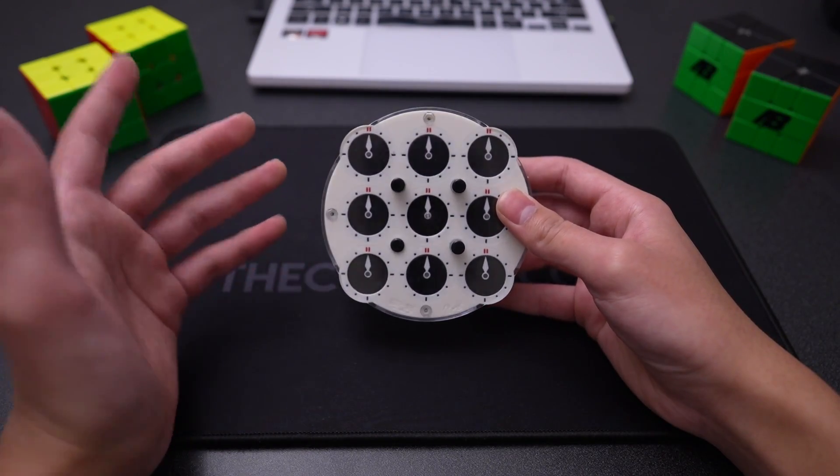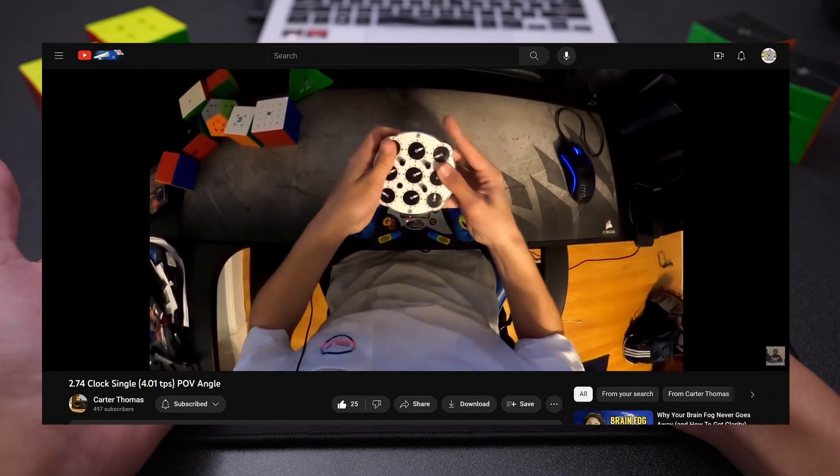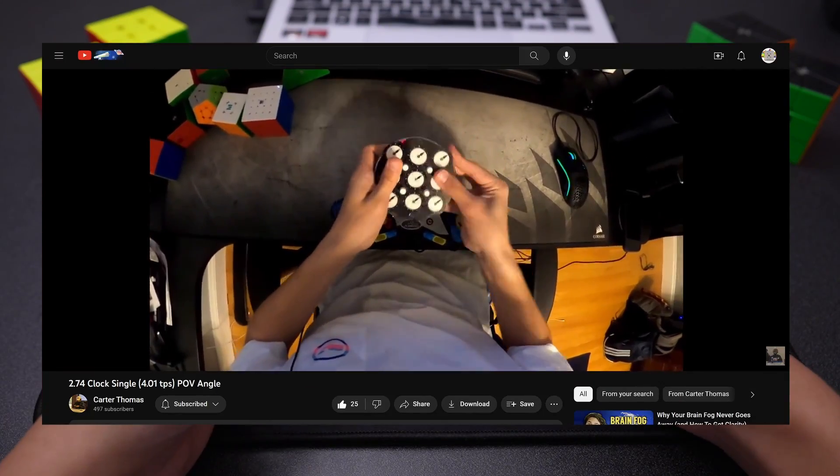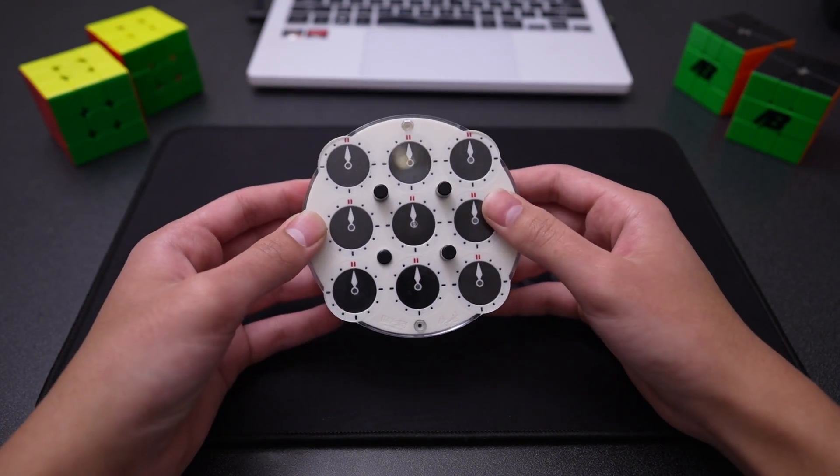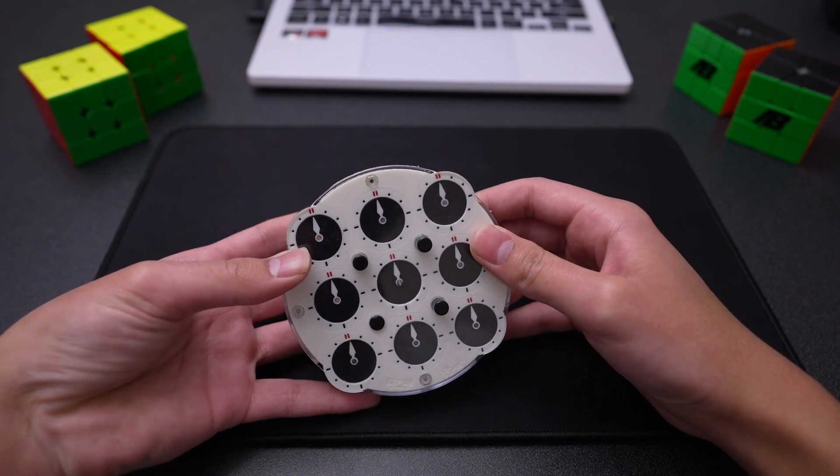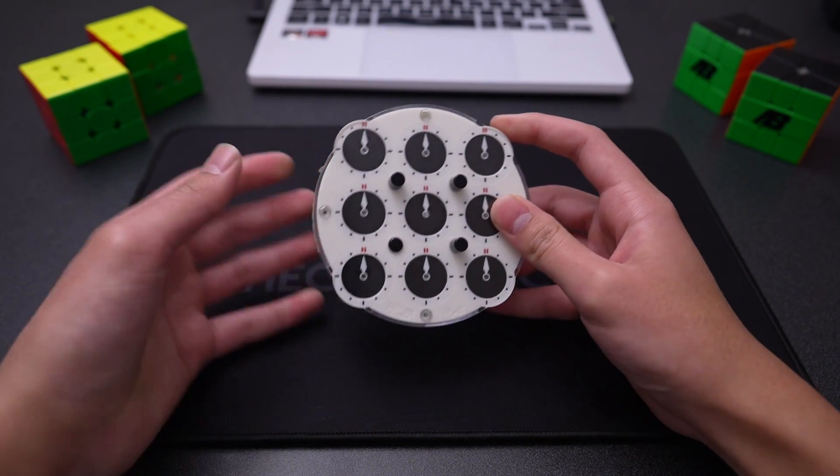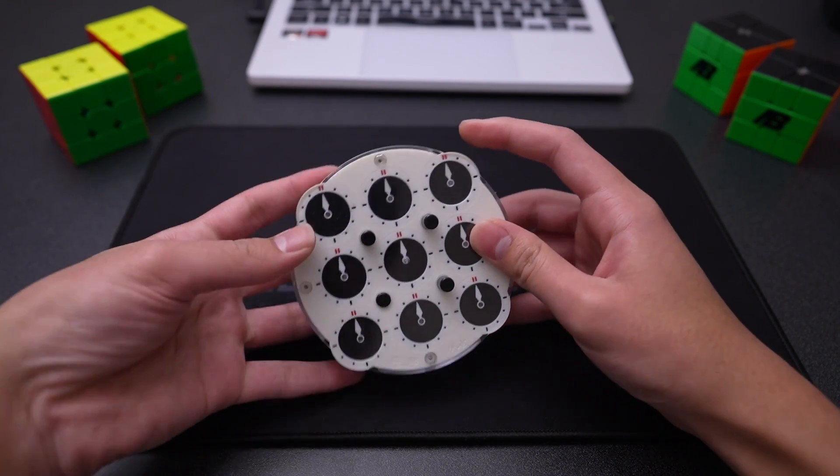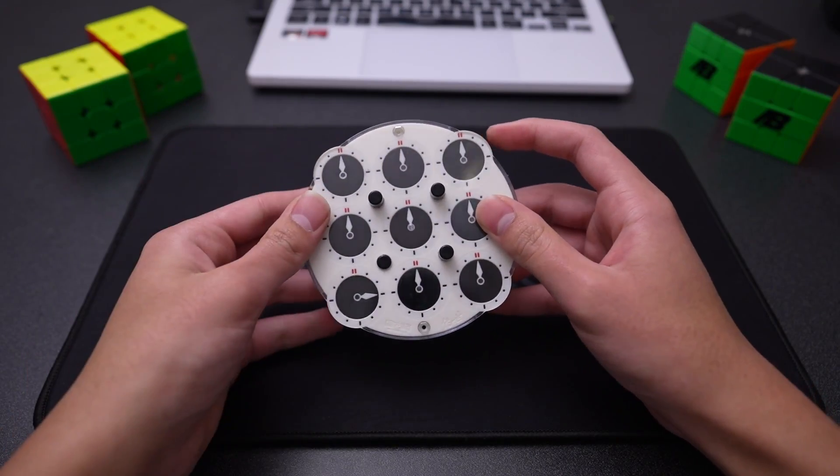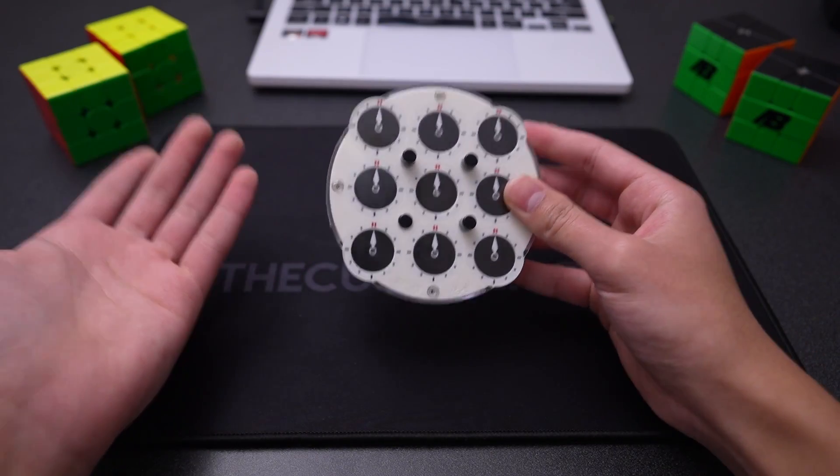And on a similar note, it's largely based off the fact that really fast turners in clock are flip solvers, who largely use this kind of visual turning. So they're not memorizing I have to do a plus three on this clock and a negative two. They're just saying, I need to move this clock to this position, and this clock to that position. And that's pretty much what Oxford is too.